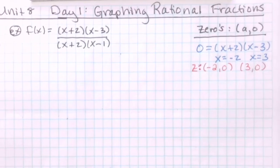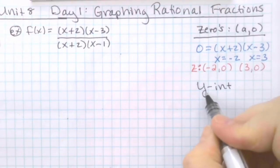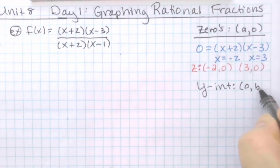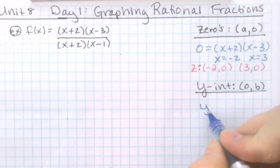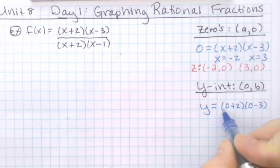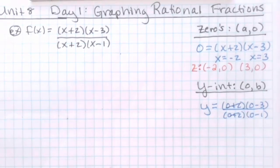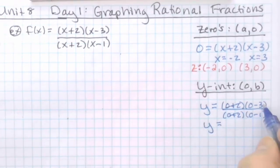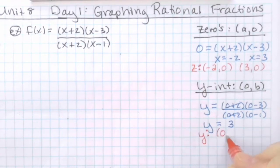The second item we're going to find is the y-intercept. All y-intercepts are 0 comma some number b. In the case of rational fractions, you're only ever going to get one y-intercept. To get the y-intercept, you set all of the x's equal to 0. That gives me 0 plus 2 times 0 minus 3 over 0 plus 2 times 0 minus 1. The 2's cancel out, so y equals negative 3 over negative 1, which is 3. My y-intercept is 0 comma 3.